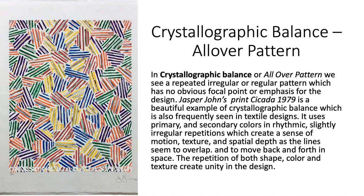Crystallographic balance is often referred to as all-over pattern. In this type of balance, we see a repeated irregular or regular pattern which has no obvious focal point or emphasis. Jasper Johns' print Shikata is a beautiful example of crystallographic balance, which is also frequently seen in textile designs. It uses a primary and secondary color rhythmic pattern with slightly irregular repetitions, which create a sense of motion, texture, and spatial depth, as the lines seem to overlap and move back and forth in space. The repetition of shape, color, and texture create a feeling of unity in the design.